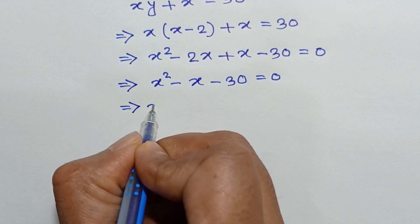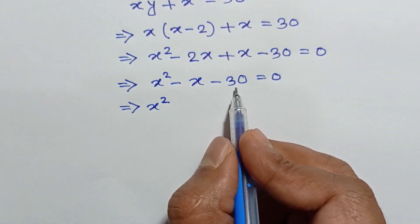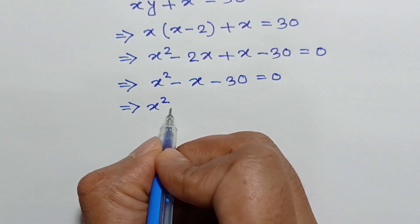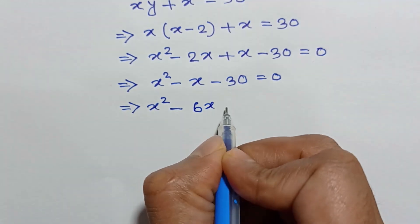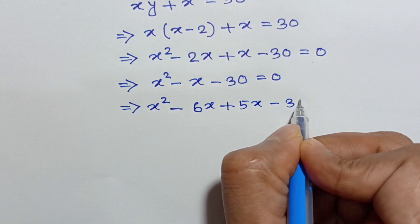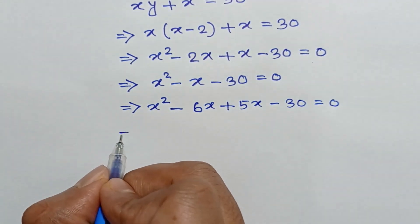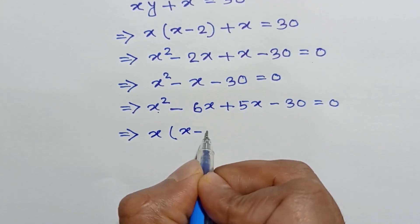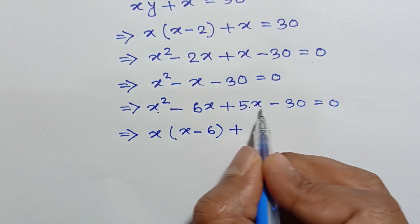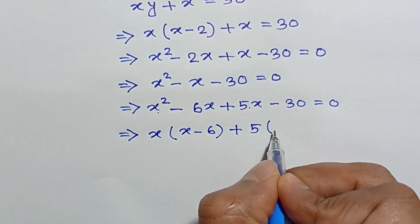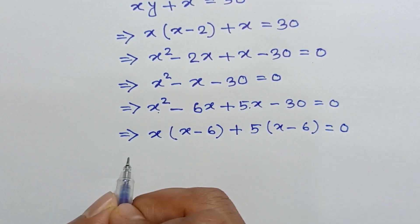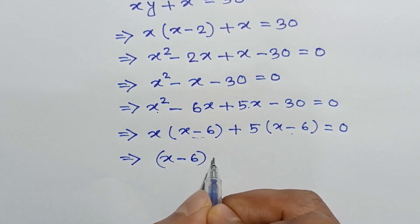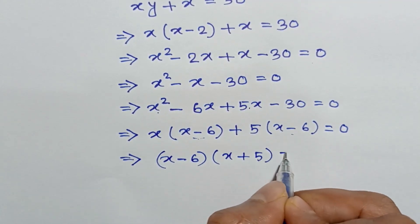Now we factor x squared minus x minus 30. We can write 30 as 6 times 5, and 6 minus 5 equals 1. So we split the middle term: x squared minus 6x plus 5x minus 30 is equal to 0. Taking x common from the first two terms and 5 common from the last two terms, we get x(x minus 6) plus 5(x minus 6) is equal to 0. Taking (x minus 6) common, we get (x minus 6)(x plus 5) is equal to 0.